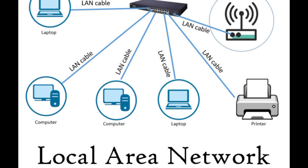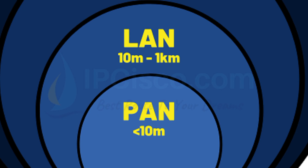Hey everyone, welcome back. Today, we're starting a three-part series all about computer networks. Now, networks might sound technical, but they're everywhere. They keep our devices connected and make everything from home Wi-Fi to global communication possible. In this first video, we're going to start small and talk about two basic types of networks: Personal Area Networks or PANs and Local Area Networks or LANs. By the end, you'll have a solid foundation for understanding how networks work and how they fit into your life.